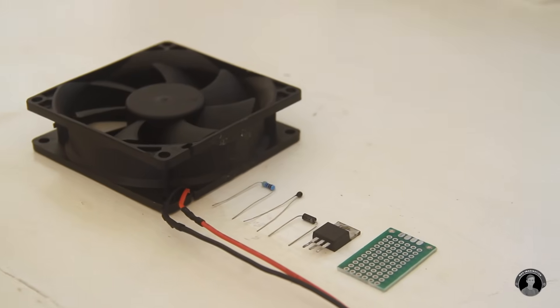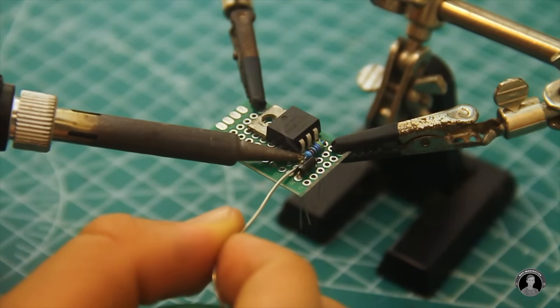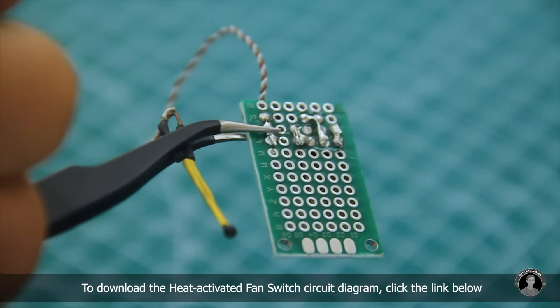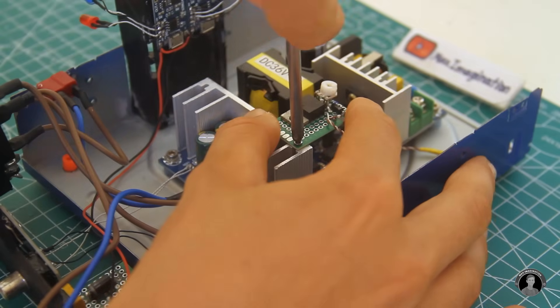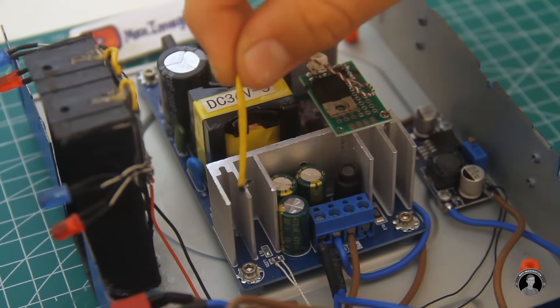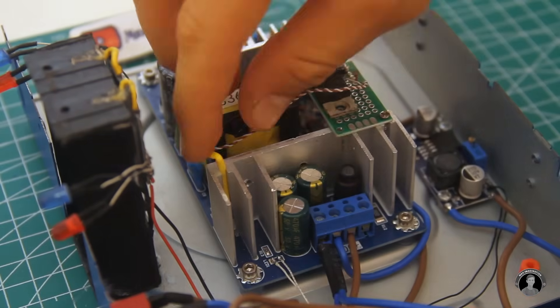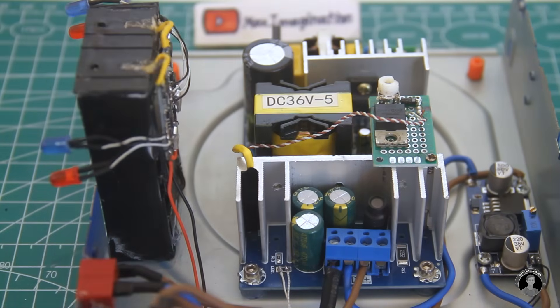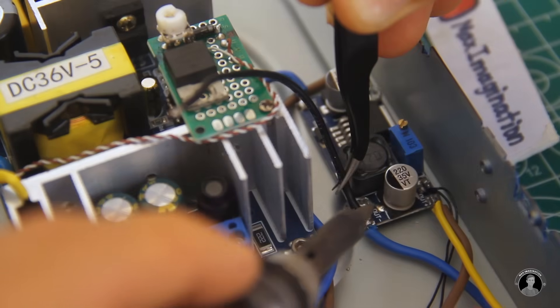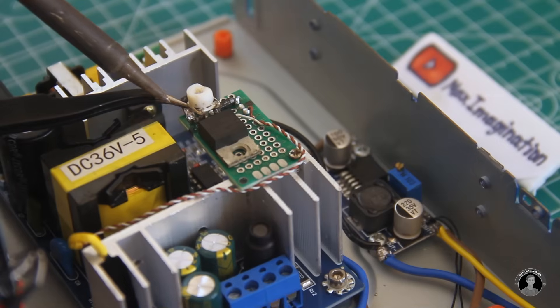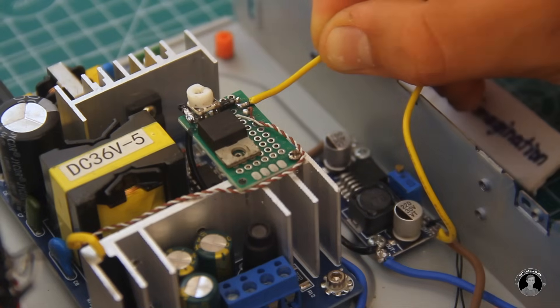You can mount the board really anywhere. I decided to mount mine on top of one of the heat sinks of the AC to DC converter, along with the thermistor tucked well into the heat sink up behind the two transistors on this board. With the 12V source hooked up to the heat activated fan switch, all it really needs now is the fan.